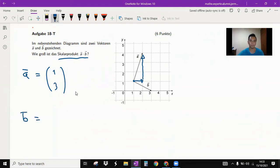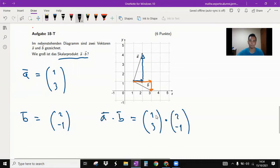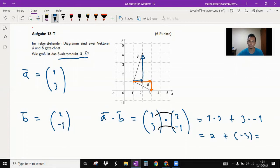And your b vector - look, you go from here two times to the right and one time downward. So here your b vector is two, minus one. And the scalar product is very easy. It's just paired like this, so one times two plus three times minus one. And you have two plus minus three, and it's minus one.